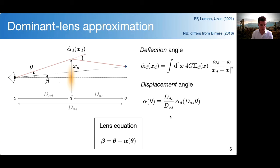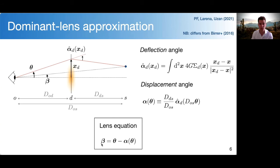The result of that procedure is what we call the lens equation, which relates the position of the source β and the position of the image θ. This is the equation you want to solve if you want to determine the different images θ associated with a given source β.